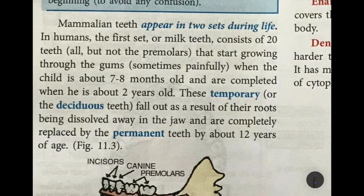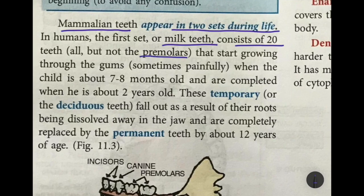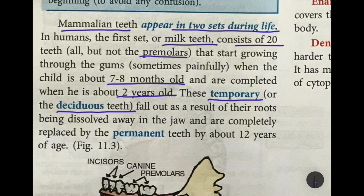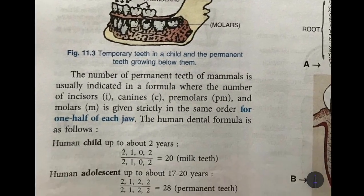Mammalian teeth appear in two sets during life. In humans, the first set of milk teeth consists of 20 teeth but not the premolars. They start growing through the gums — sometimes painfully — when the child is about seven to eight months old. The complete set comes out by the time the child reaches two years. These temporary teeth, also known as deciduous teeth, fall out as their roots are dissolved away in the jaw and are completely replaced by permanent teeth by about 12 years of age.